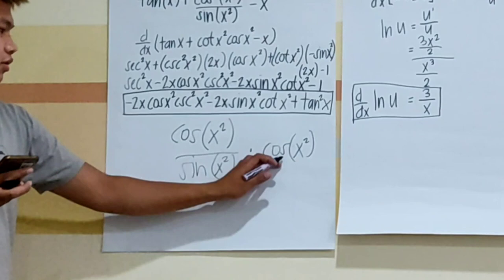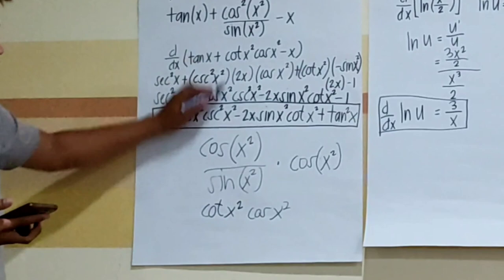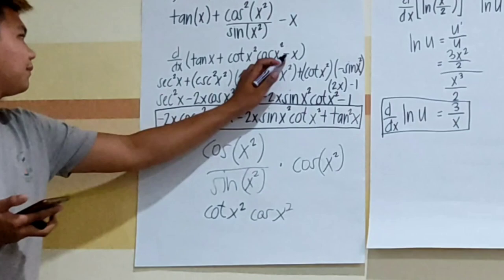Then copy the cos(x²). So the simplified expression is tangent(x) plus cos(x²), all times x minus x. Then we need to derive this function.